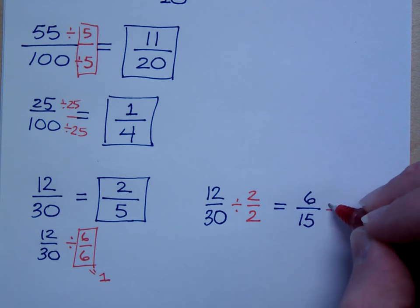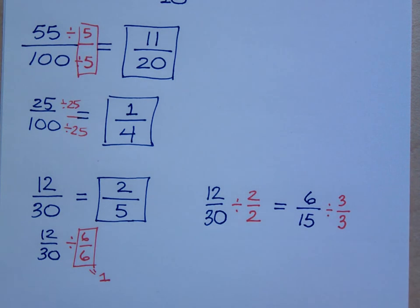I'm dividing by 3 over 3, which is a form of 1. So 6 divided by 3 is what? 2 and 15 divided by 3 is 5. Do I still get the same answer? Yes. As long as you do things legitimately, you still get the same answer. Can we be happy about that?